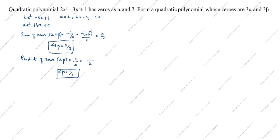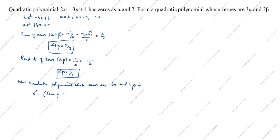Now we will find the new quadratic polynomial whose zeros are 3 alpha and 3 beta. The form is x squared minus (sum of zeros)x plus (product of zeros). So it becomes x squared minus (3 alpha plus 3 beta)x plus (3 alpha times 3 beta).